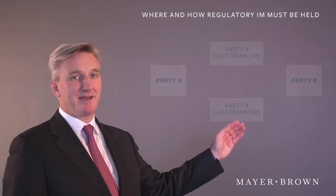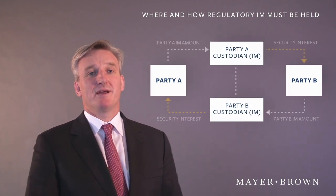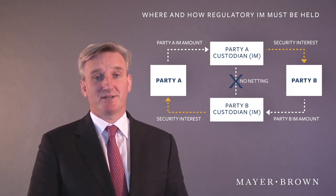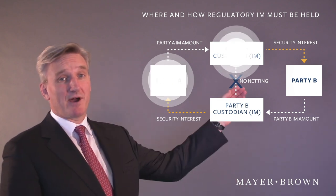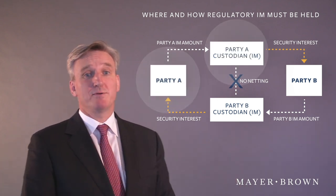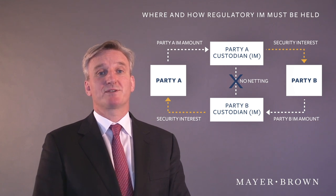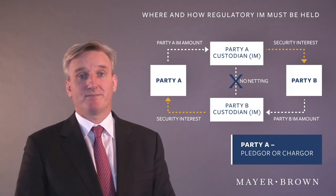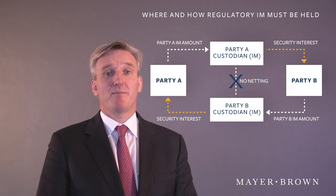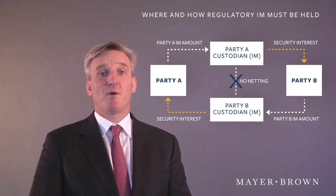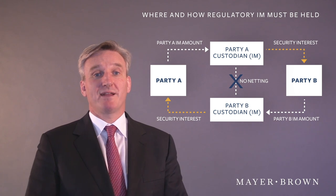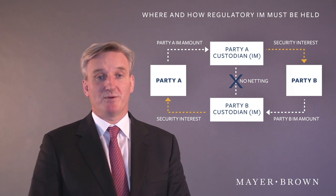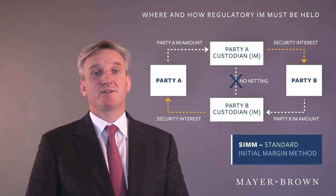Looking at the diagram here, this is an illustration of how IM is held, and it applies for each pairing between counterparty groups. We have two counterparties. Looking at the top part of the diagram, party A posts its IM amount to a secured account with its custodian. Party A is called the pledgor or chargor. The amount of IM which must be posted is determined under either an approved model such as SIMM, the standard initial margin method, or by the regulatory prescribed table which is known as the grid or the schedule.